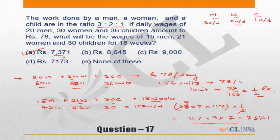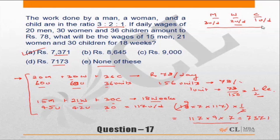Given that the two choices are close and approximation won't work, I would calculate using the first conversion method. However, for those not comfortable with ratios, the unit-per-day method is advisable rather than any other approach.